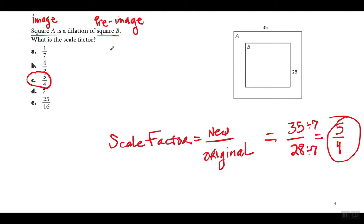En este problema lo tienen que leer y entender bien porque es muy fácil confundir. Dice que cuadrado A es una dilatación de cuadrado B. El factor de escala se escribe comparando los lados correspondientes — el nuevo arriba y el original abajo. Un cuadrado tiene todos los lados iguales, así que no importa cuáles lados comparamos. El nuevo se pone arriba (35) y el original abajo (28). Siempre hay que simplificar la fracción, así que sería 5 sobre 4 el factor de escala.